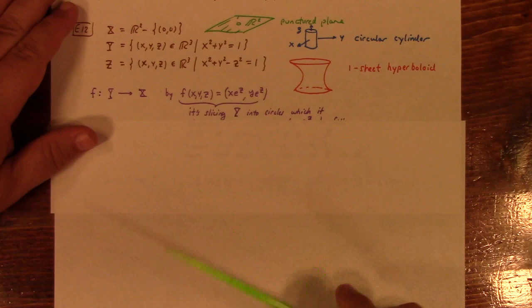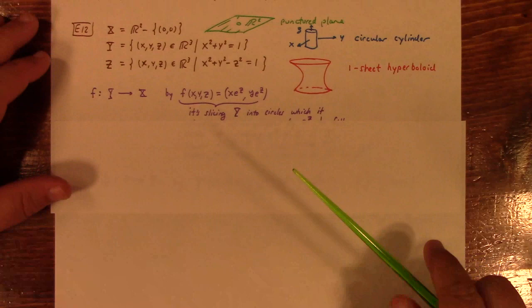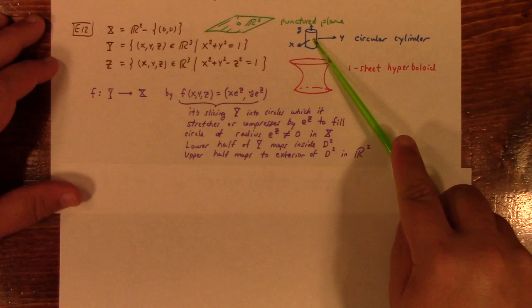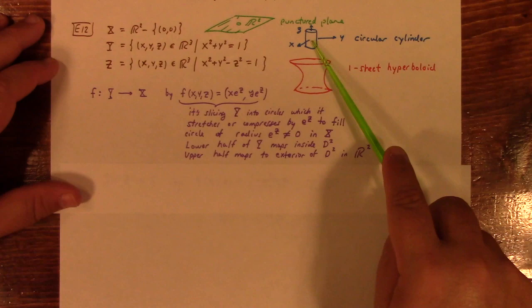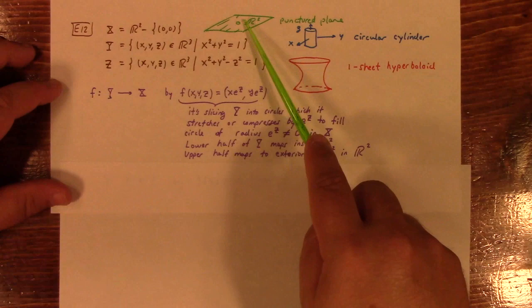And, I was thinking about how to picture it. Basically, what it's doing is it's taking a circular cylinder, it's slicing it into circles, and it's just taking those circles and sort of pasting them onto the plane. And it either stretches or compresses by e to the Z. E to the Z is the radius of the image circle. So what that means is the lower half of this guy, with Z less than 0, it maps inside the unit disc over here. And the upper half maps outside the unit disc. The circle of the cylinder, which is on the XY plane, is actually mapping to the unit circle over here under this map. So, that's pretty neat. And this is continuous with a continuous inverse.